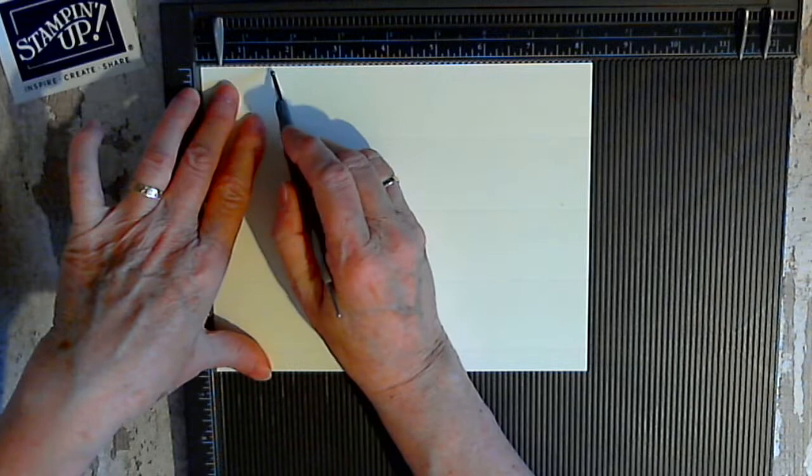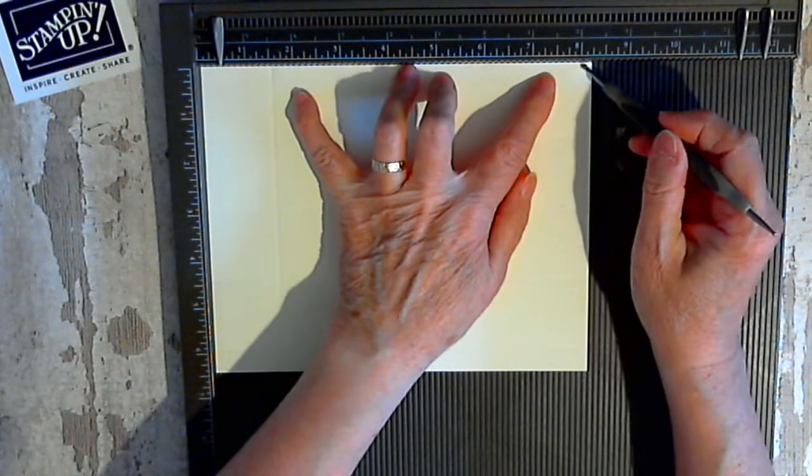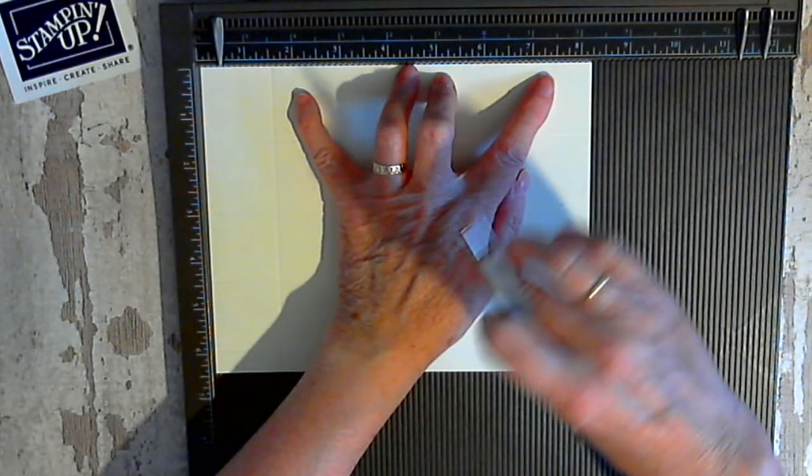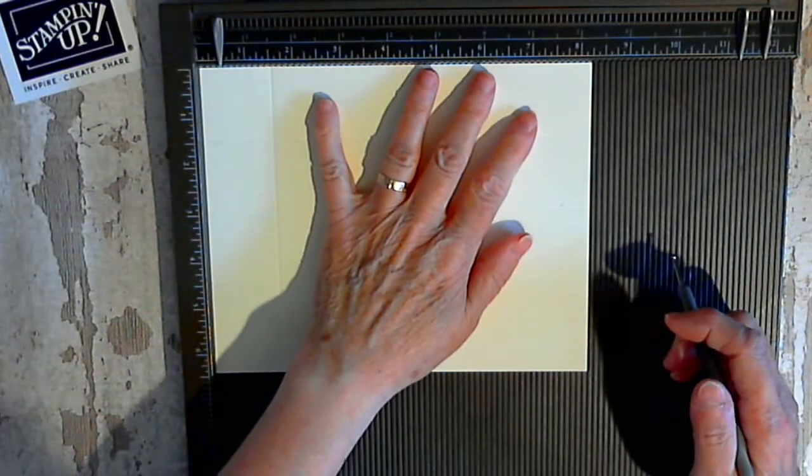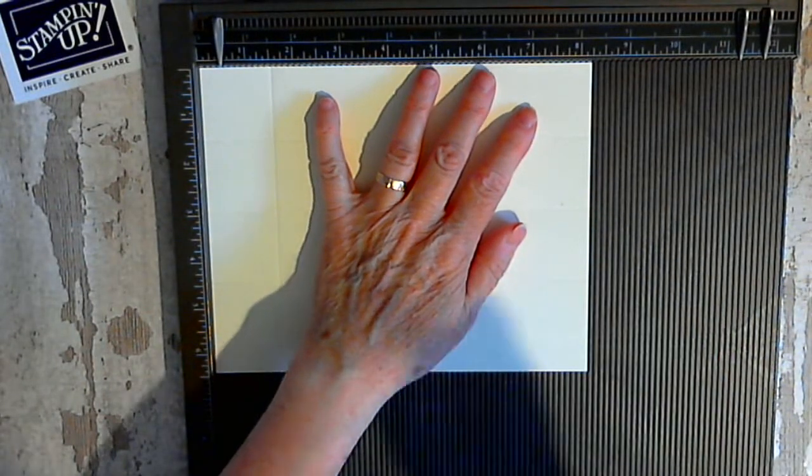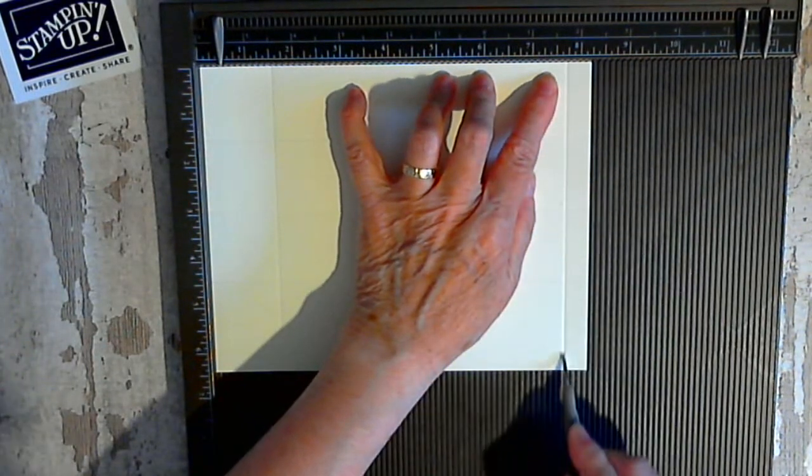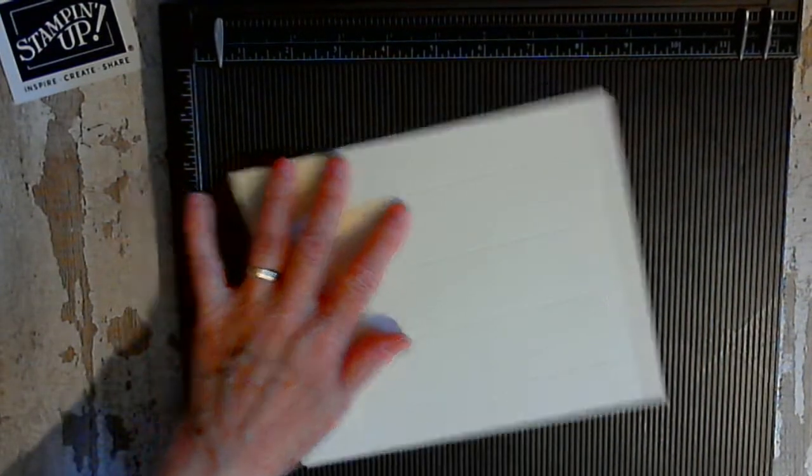On this one I'm going to add an extra score because I want to fold it in to give the rim of the box a bit more strength to make it sturdier. Score at seven and six eighths, and that gives you that rim there.